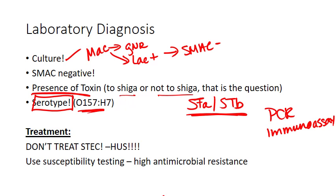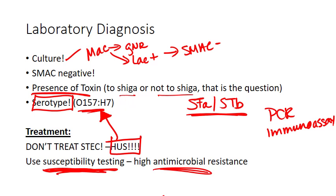Treatment is tricky with these organisms. You are not going to treat EHEC with antibiotics because treatment of EHEC has been associated with prolonged fecal carriage and increased risk of HUS. If you know you have O157H7, you give supportive care only — you don't want to increase the chances of the patient developing HUS. Any treatment decision you do make should be based on susceptibility testing, because these organisms live in our GI tract and have pretty high antibiotic resistance that is only growing. We even have significant resistance to extended spectrum beta-lactamases, which has affected the use of carbapenem drugs we used to rely on. You will never treat HUS with antibiotics.